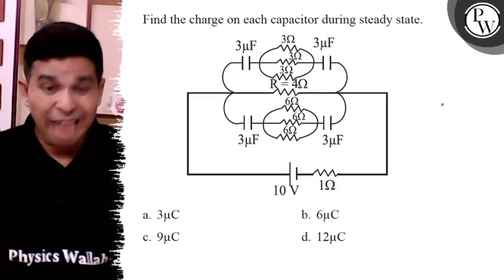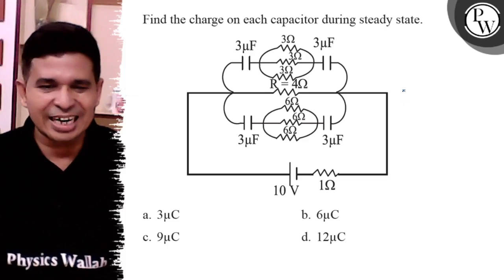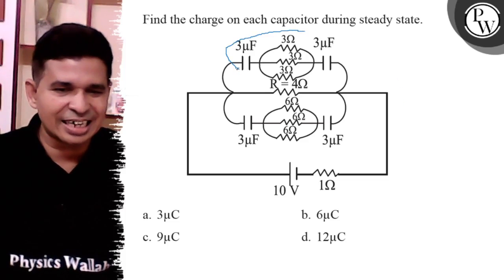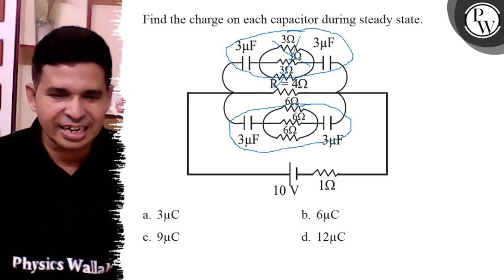Find the charge on each capacitor during steady state condition. First, remove that part in which the capacitor is connected. So, it is the steady state condition. There is no current in that circuit.